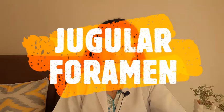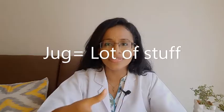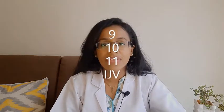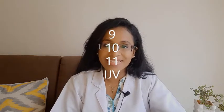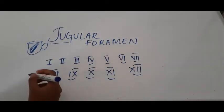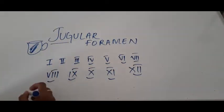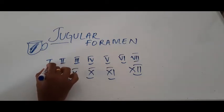Next is jugular foramen. Jugular foramen, when you write it's J-U-G. Jug. Jug contains a lot of stuff. So jugular foramen contains a lot of nerves. Let's look at it. Nine, ten, eleven nerves and internal jugular vein. How do you remember what goes through jugular foramen?